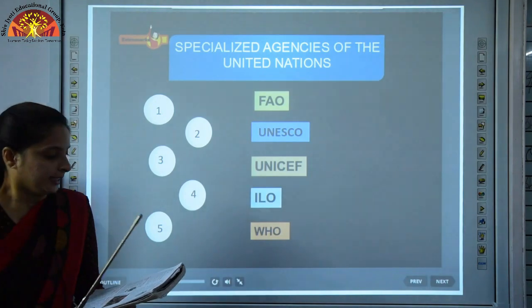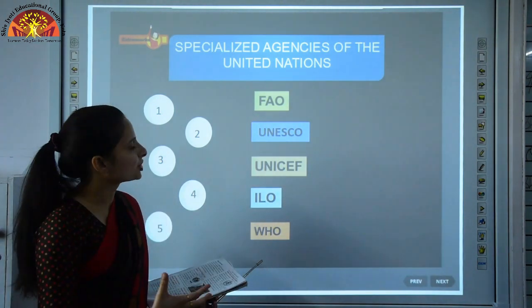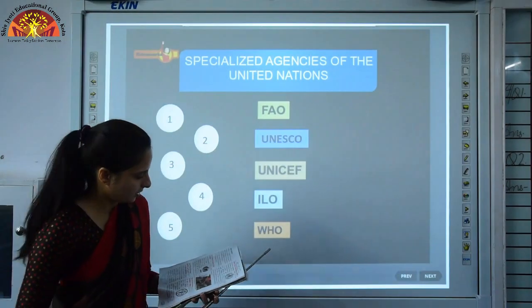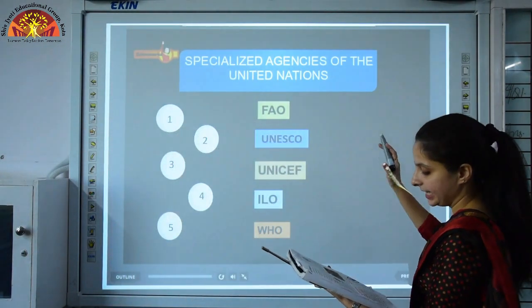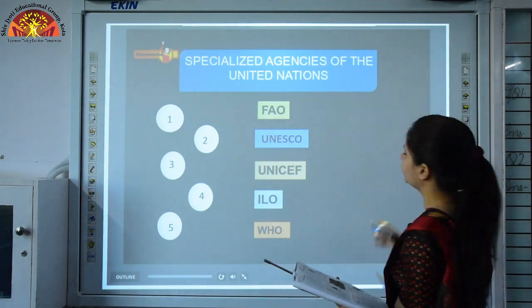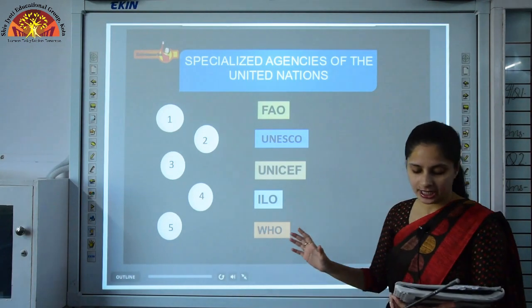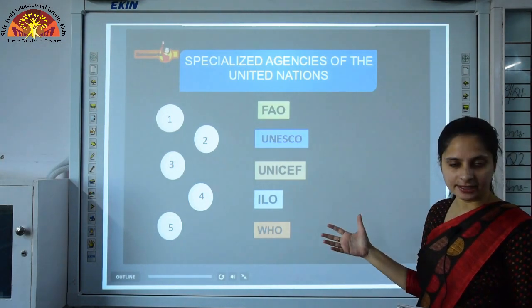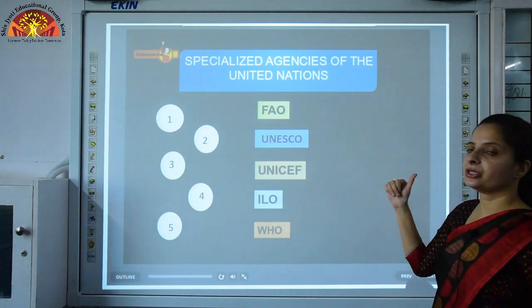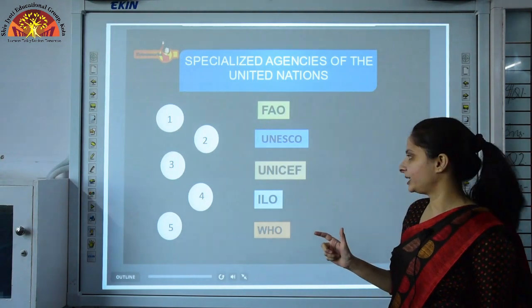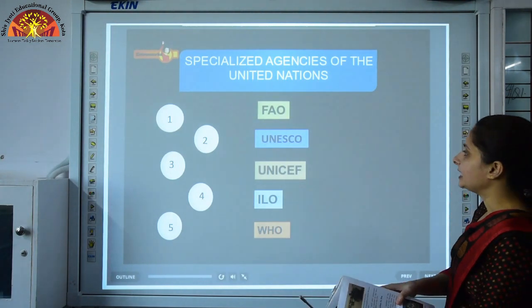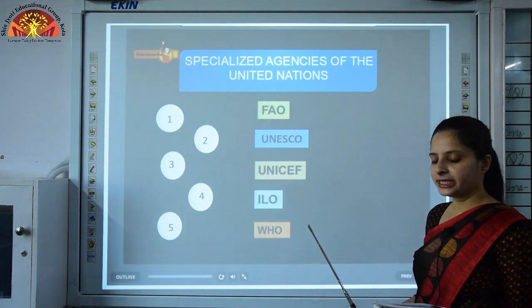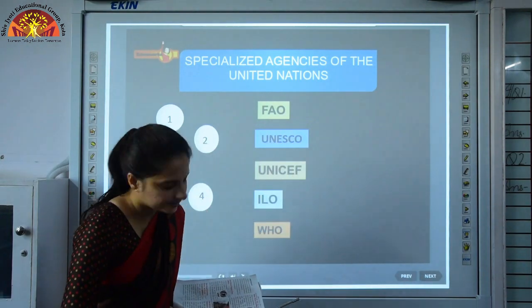Much of the UN's work is carried out by specialized agencies dealing with food, aid, health and education. These include: FAO, established on October 16, 1945; UNESCO, established in 1946 with headquarters in Paris; UNICEF, established in 1946 with headquarters in New York; ILO, established in 1919 with headquarters in Geneva, Switzerland; and WHO, established in 1948 with headquarters in Geneva, Switzerland.